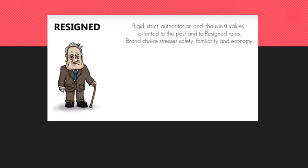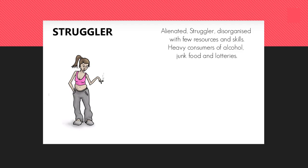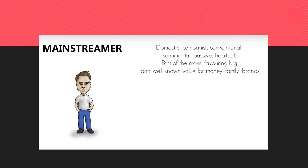These categories even come with little profiles showing what each type of person might look like. For example, 'resigned' is depicted as rigid and strict. A 'struggler' feels alienated, is disorganised, has few resources and skills, drinks a lot, eats junk food, and plays the lottery. These categories describe people by their characteristics rather than just their gender or age. Have a look through all the categories — seeing the pictures alongside the descriptions makes psychographics a little easier to understand.